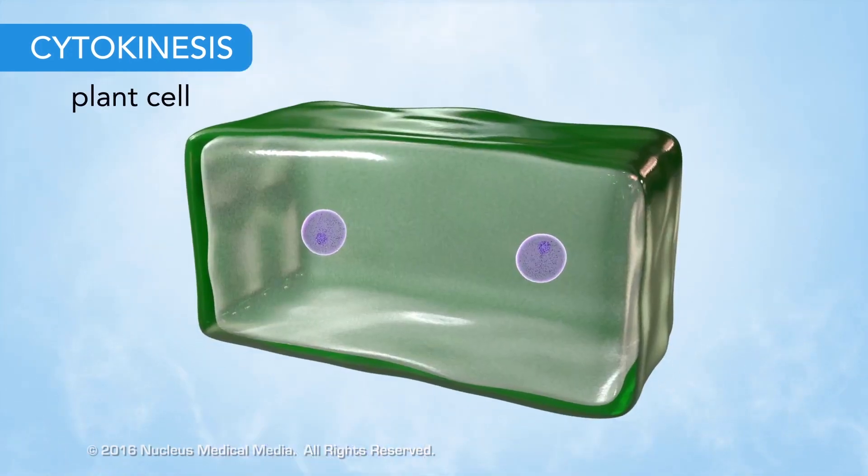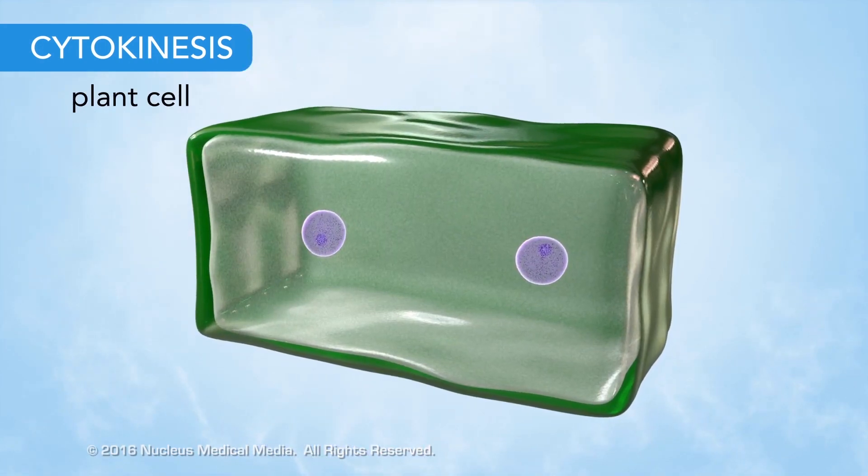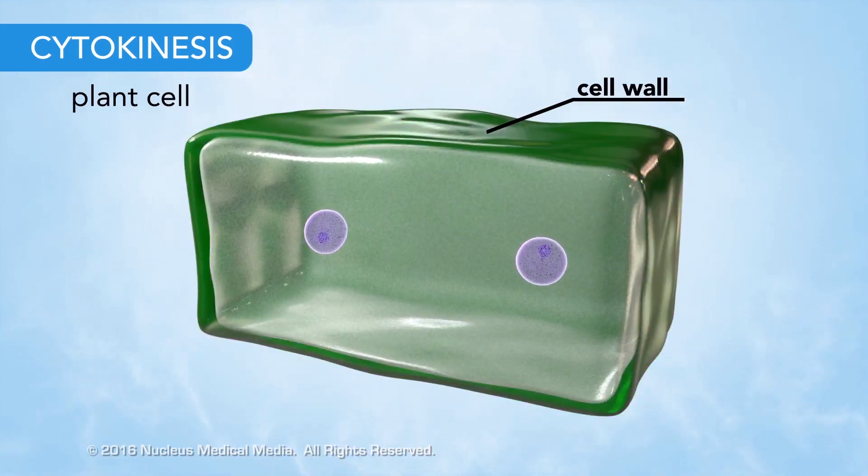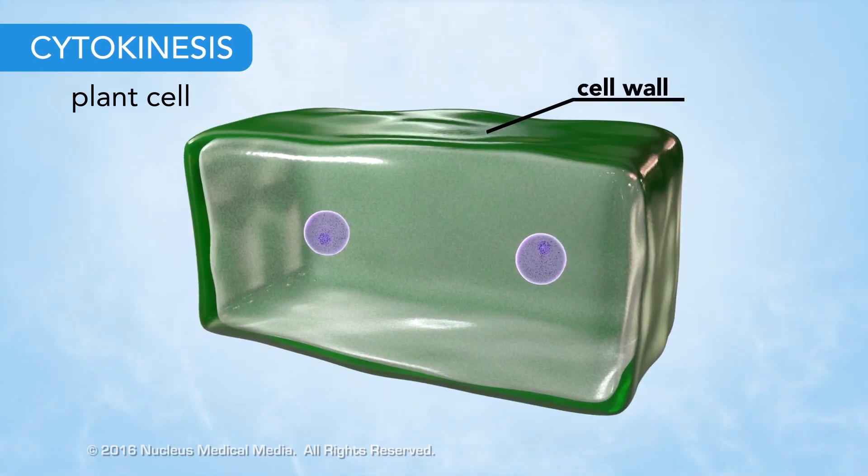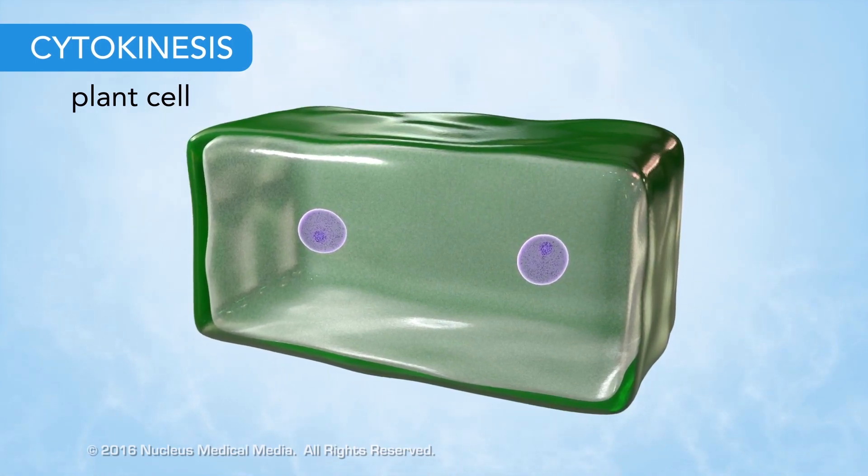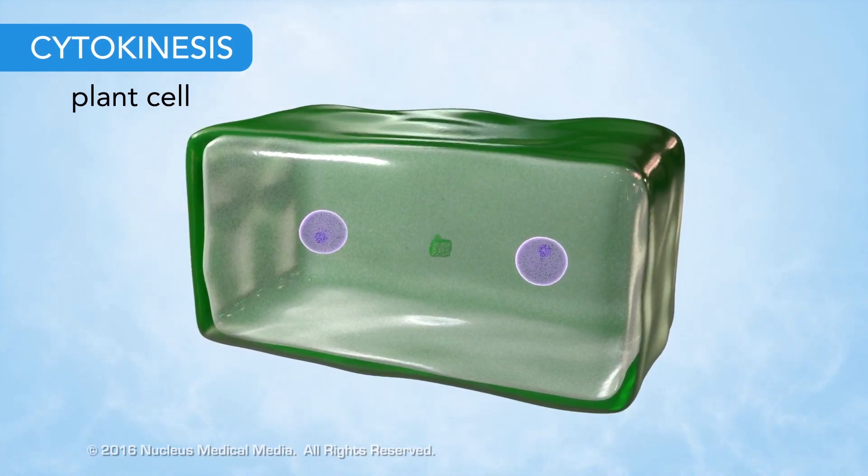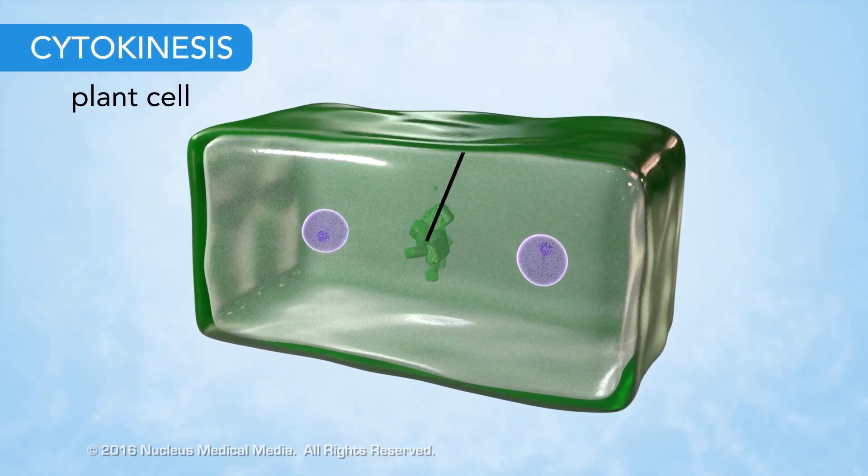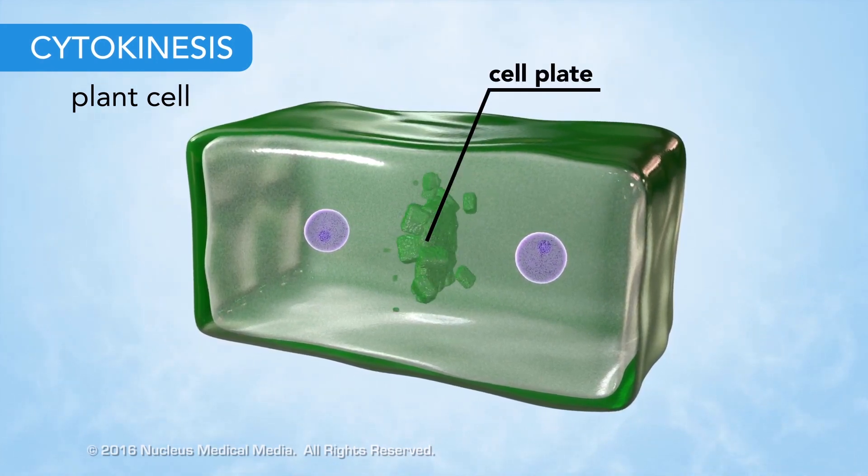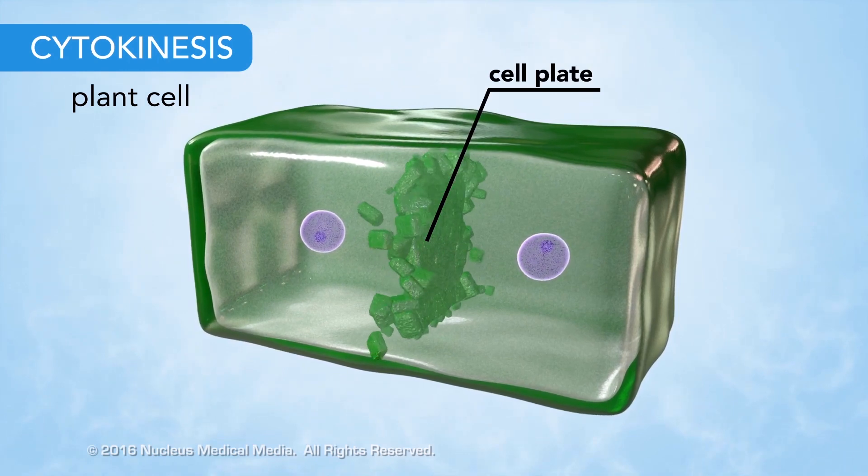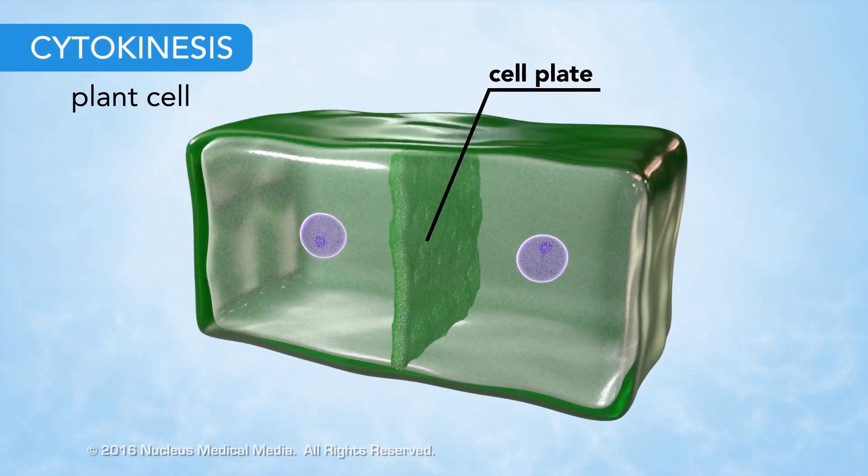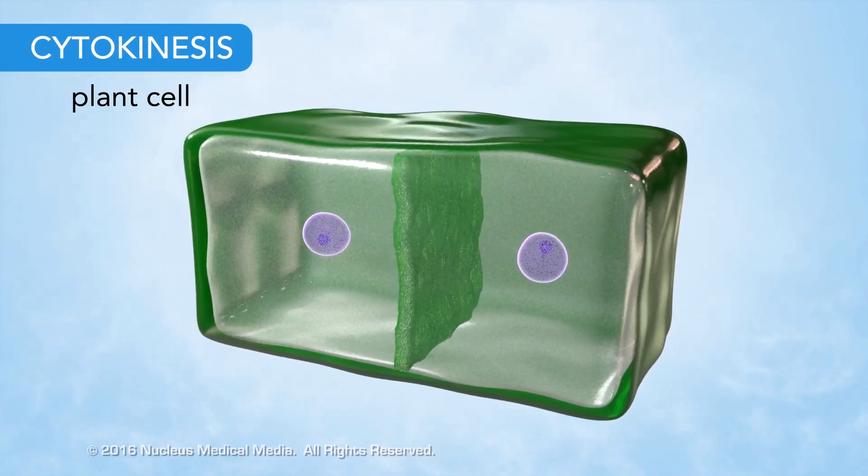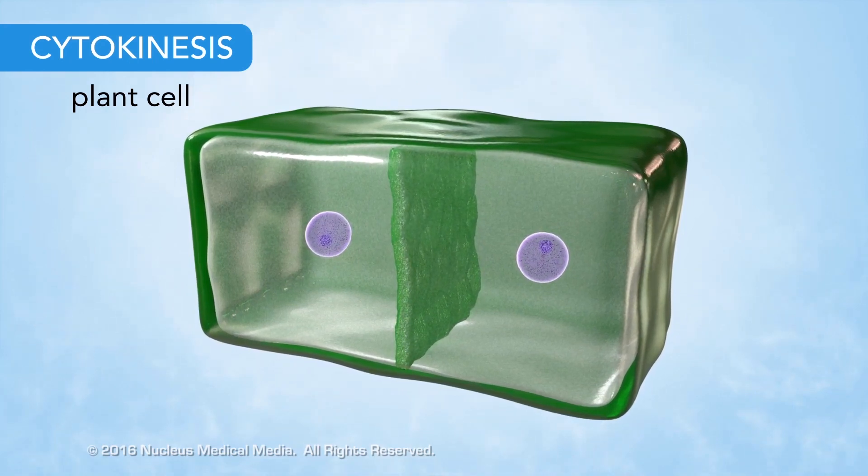In contrast, plant cells can't pinch in two, because they have a rigid cell wall surrounding their cell membrane. Instead, cell wall material assembles along the equator, forming a structure called the cell plate. The cell plate grows until it joins with the existing cell membrane, separating the two halves of the cell into daughter cells.